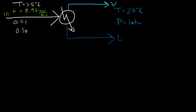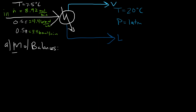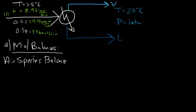Working in moles, let's write down the ethanol and air molar flow rates. Since the mixture is equimolar, each is half of 8.92, which leads into the crux of this first video: the mole balances.